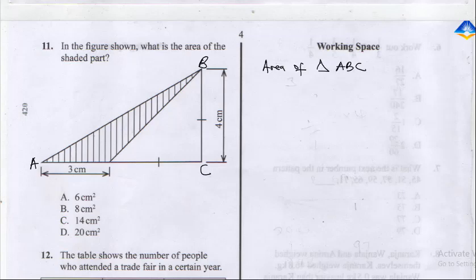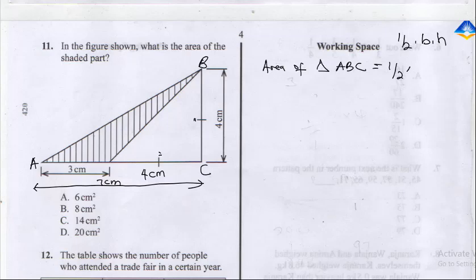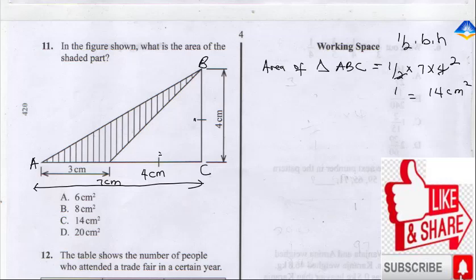Because of this sign here, that means here it's 4 cm. So the total length of this triangle is 3 plus 4, which gives us 7 cm. The area of triangle ABC is half times base times height, so it's half times 7 times 4, which gives us 14 cm squared.